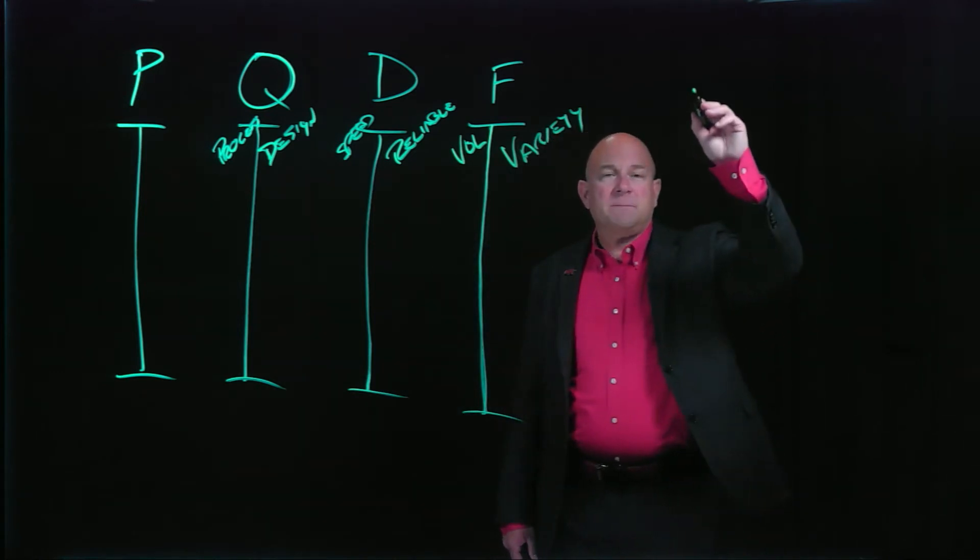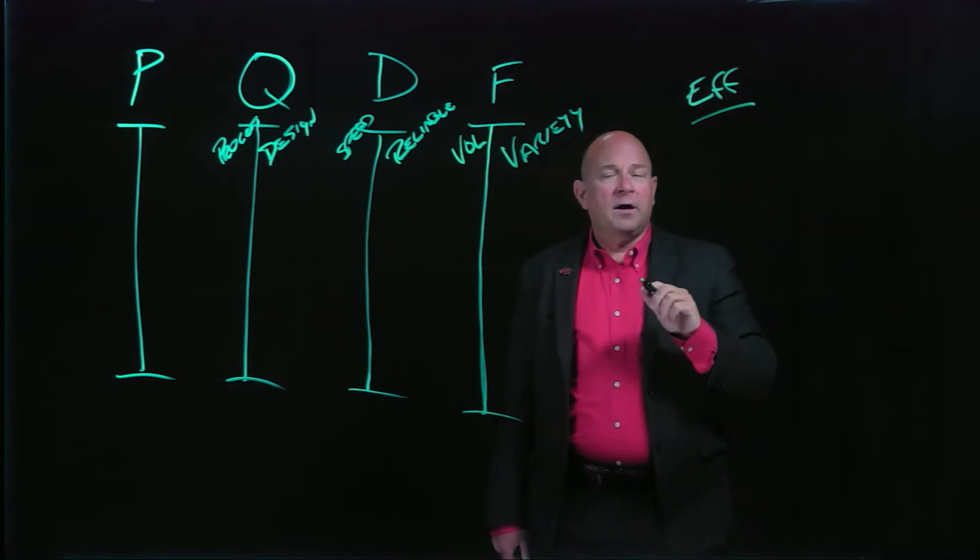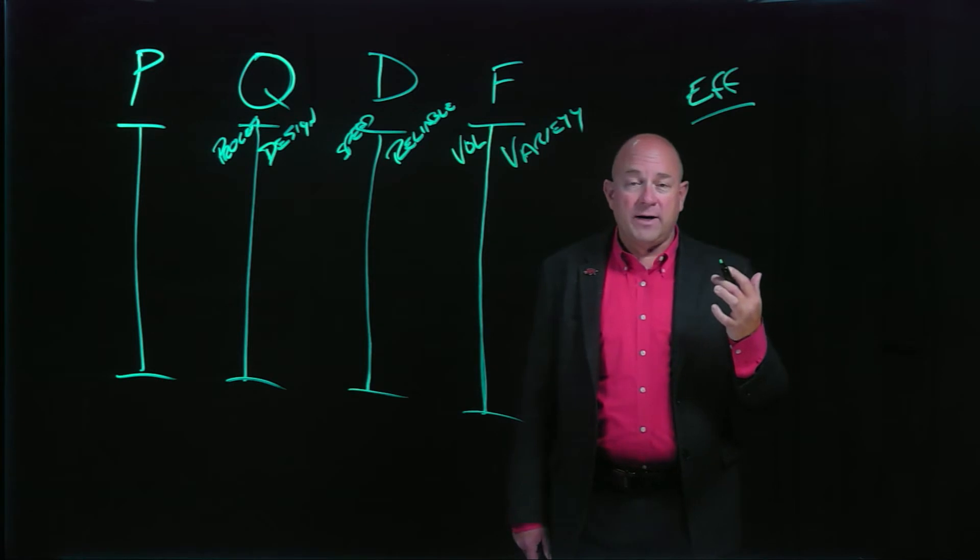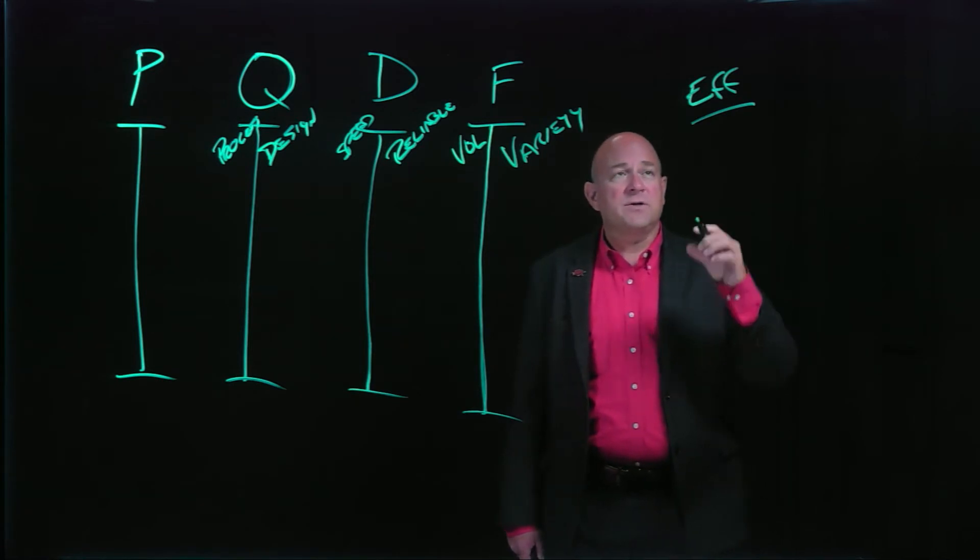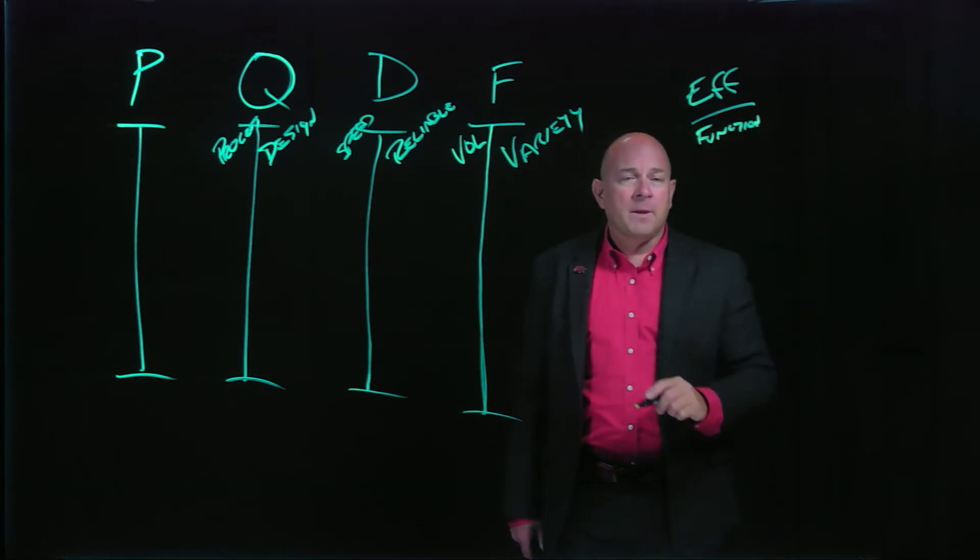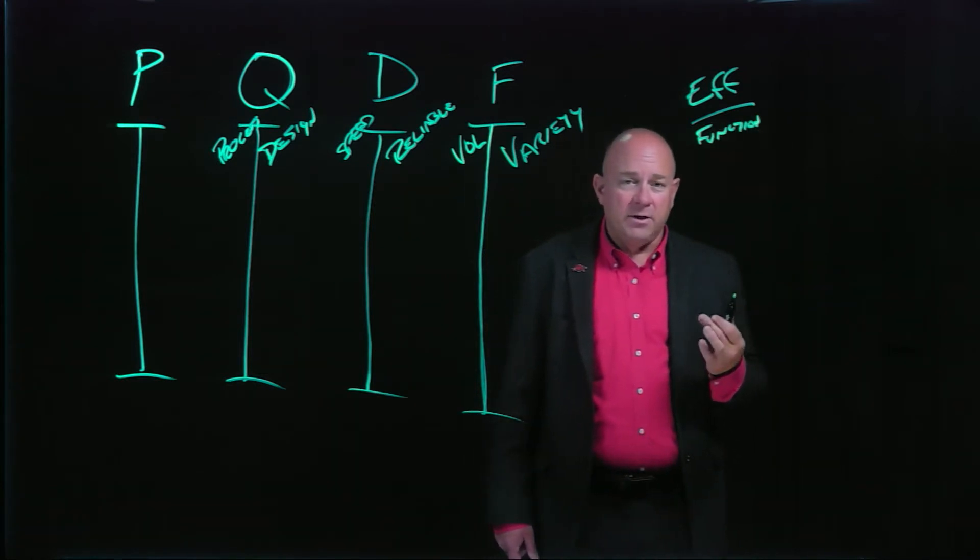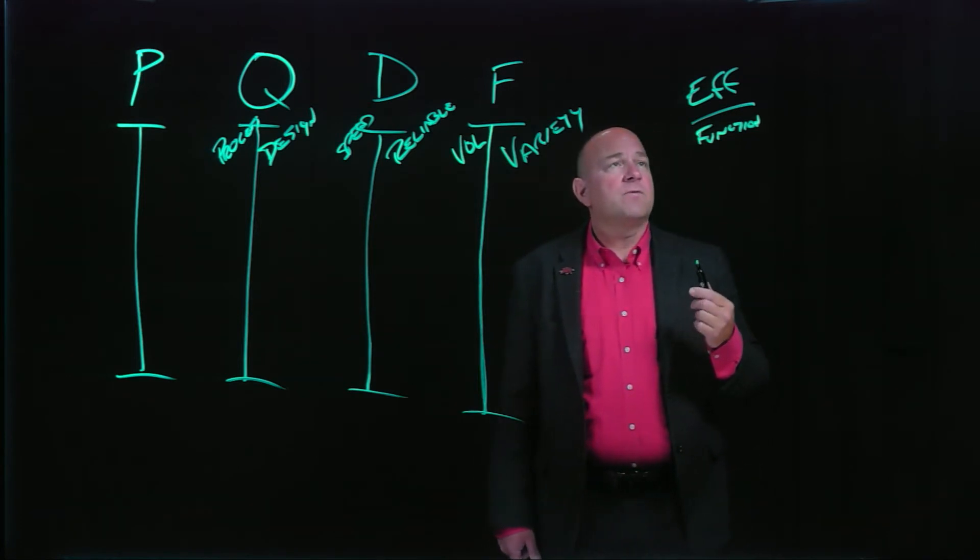Then we talked about two different supply chain strategies. We talked about efficient supply chain strategies that are in alignment with low-cost leadership strategies that organizations have. These tend to have functional products with low contribution margins, low forecasting error, very stable types of environments, and so forth.